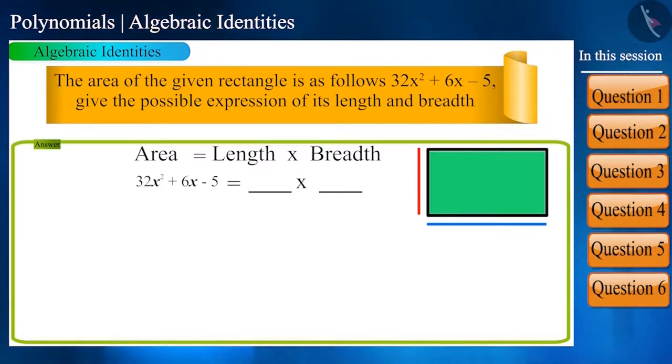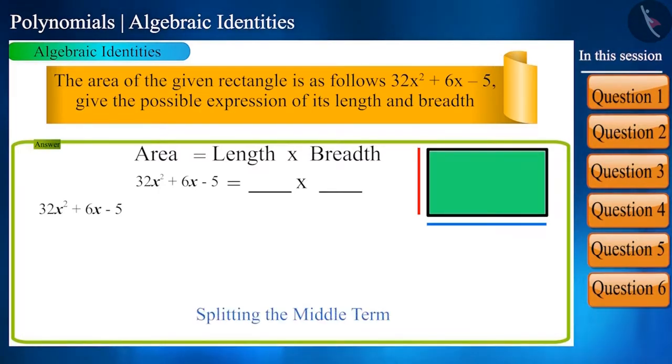After finding its factors, we have to substitute it with the length and the breadth. This means we have to find the factors of this polynomial. We will solve this polynomial 32x² + 6x - 5 by splitting the middle term method.